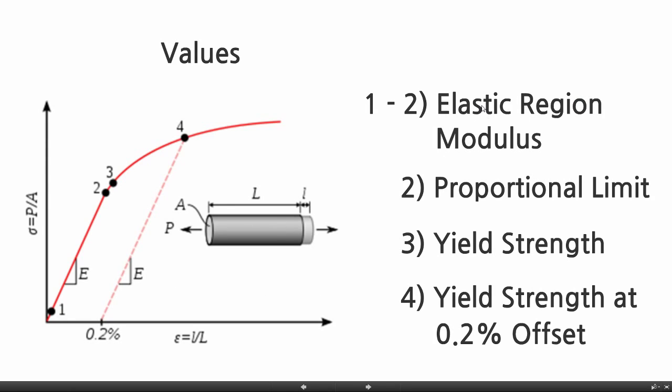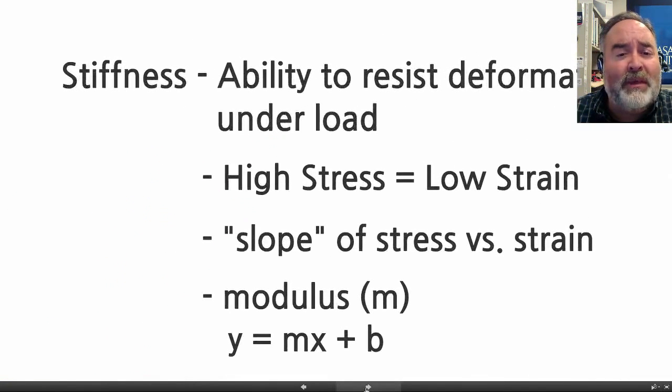So those are all our vocabulary words. Again, getting me out of here. The elastic region is where we calculate the modulus. The proportional limit is where it transitions from being elastic to plastic. Also could be the yield strength or the yield point. We call it the proportional limit. Again, the yield strength is anywhere along here. 3 just happens to be an example. It's much more common to say yield strength at a particular strain. And the strain we're using is the strain at 0.2%. Okay? It's a lot of information to throw at you, but it all makes sense pretty quickly.